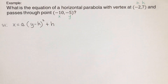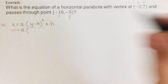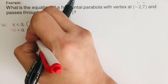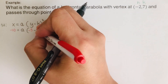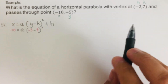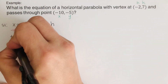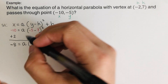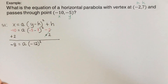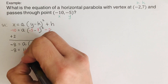So x is negative 10, which we plug in here: negative 10 equals a times (y minus k) squared plus h. Our y is negative 5, our k is 7, so that's (negative 5 minus 7) squared. Our h is negative 2, so we put minus 2 at the end. Simplifying, we add 2 to both sides, giving us negative 8 equals a times (negative 12) squared. Negative 12 times negative 12 is positive 144a.